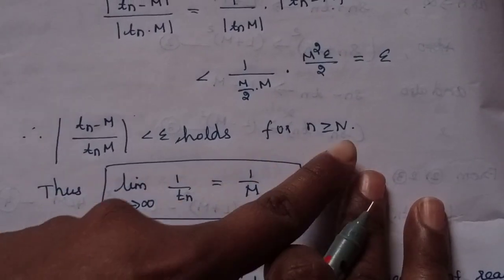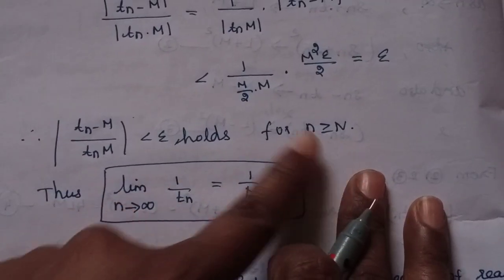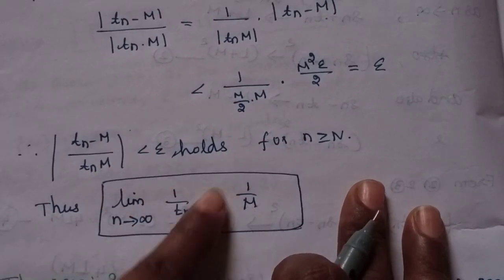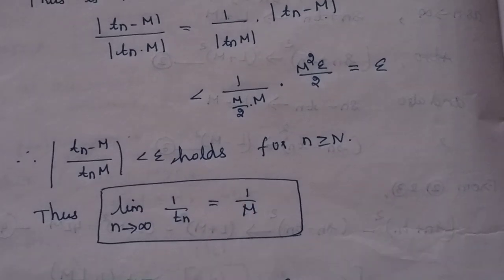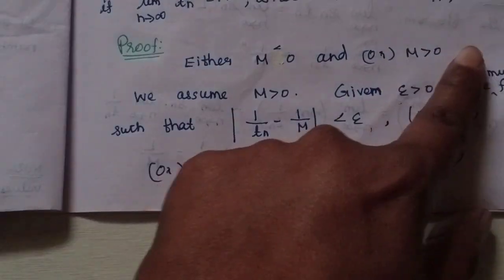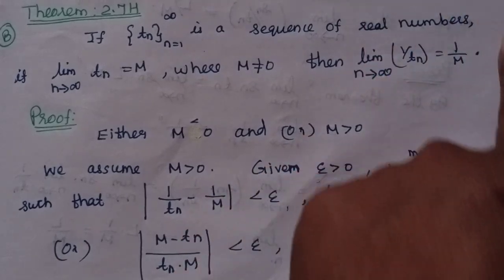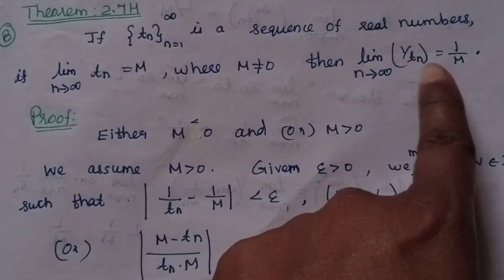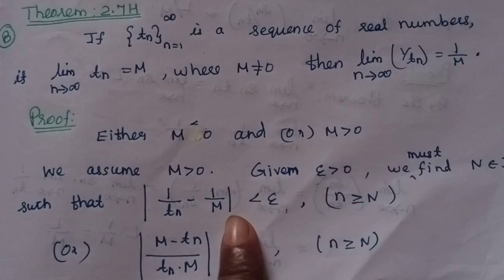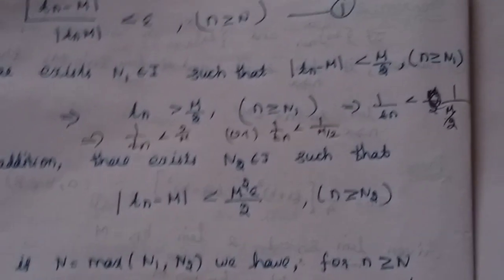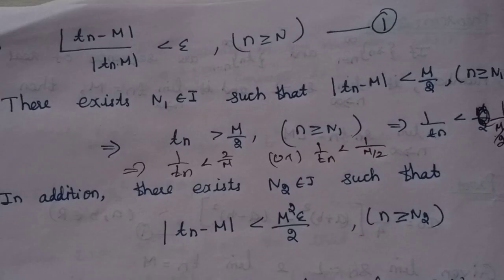This holds for all n greater than or equal to N. That is, limit n tends to infinity of 1 by tn equals 1 by m. So in the convergence we say N exists such that modulus of 1 by tn minus 1 by m is less than epsilon — we have shown this by definition.